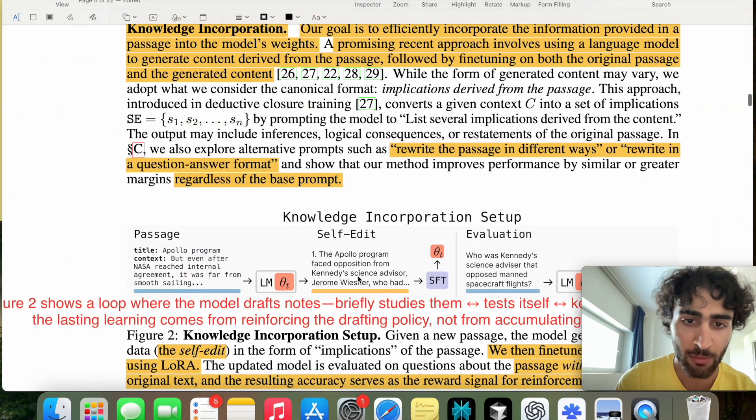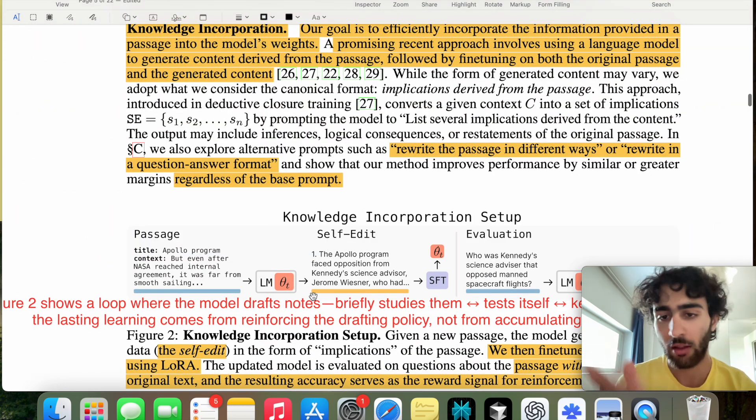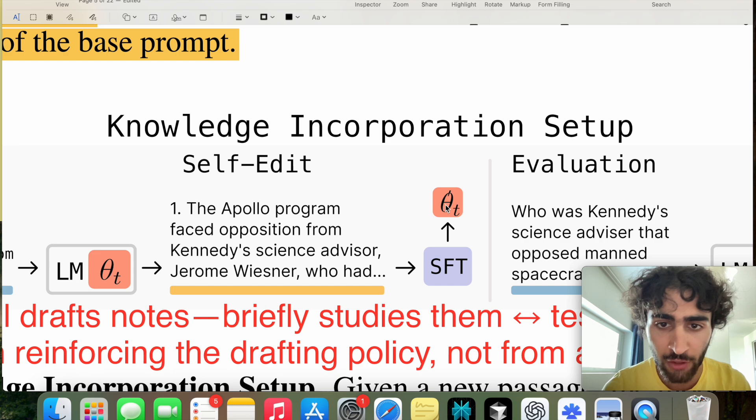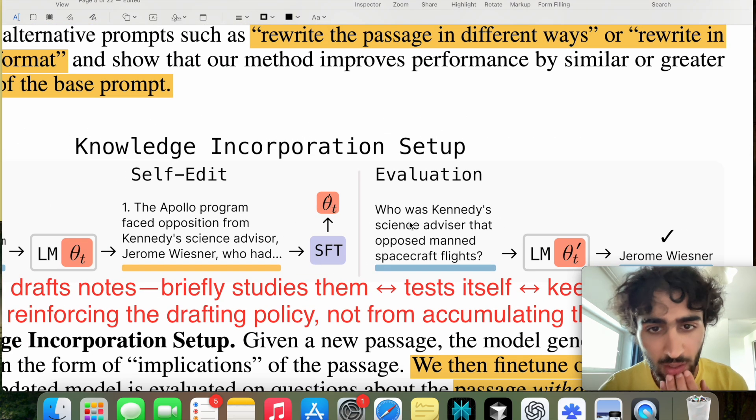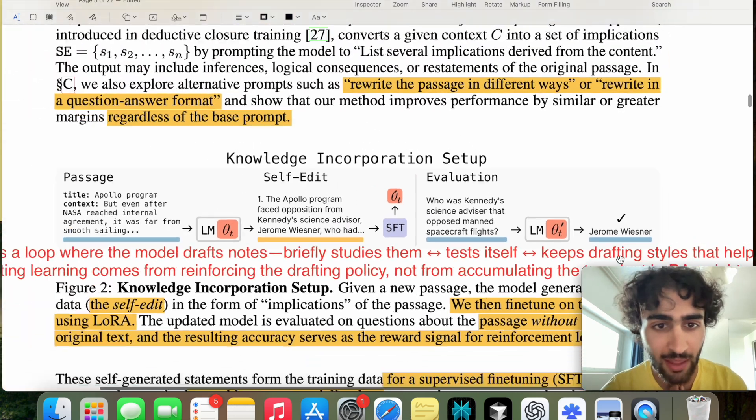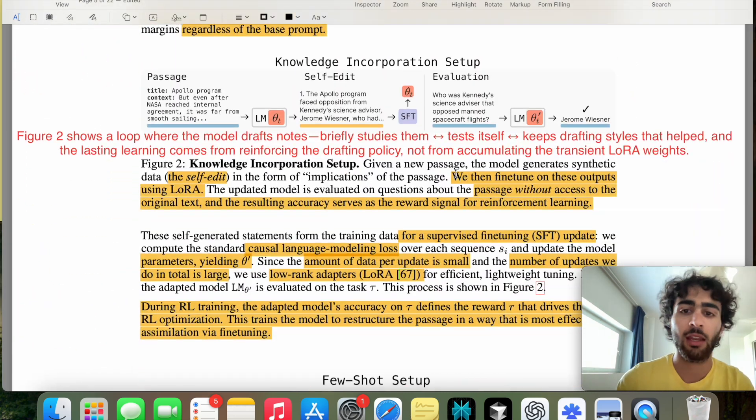So what are the logical implications of this statement? Well, it is one, the Apollo program faced opposition from Kennedy's science advisor, two, blah blah blah blah blah. And then based on these implications, we have our new adopted weight. And then on evaluation, it literally just asks who was opposed. And then if it gets Jeremy Weisner right, then the reward is one.